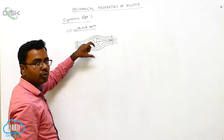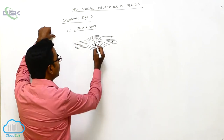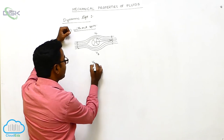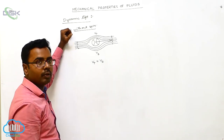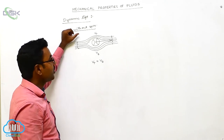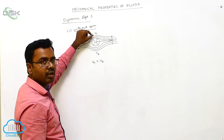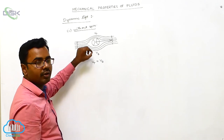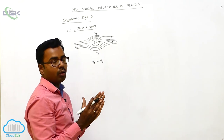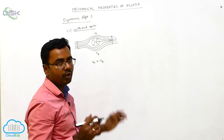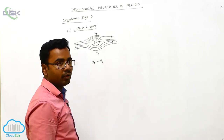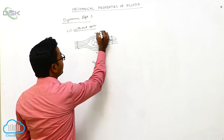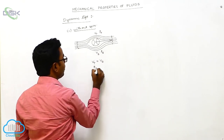If the streamlines are symmetric above and below the ball, there is the same velocity above and below. At the top of the ball, velocity is vt; at the bottom, velocity is vb. Here, vt equals vb — the velocity at the top and bottom is the same. Generally, velocity is more where streamlines are close together and less where they are far apart. But here, the streamlines are equally spaced above and below, so vt equals vb, and therefore the pressures are also the same: Pt equals Pb.